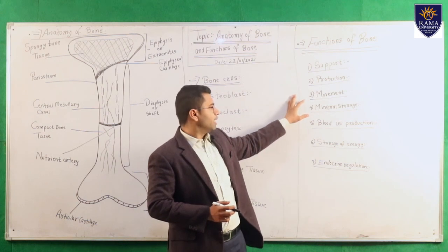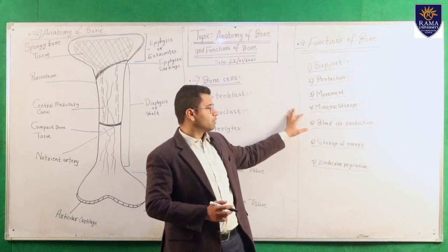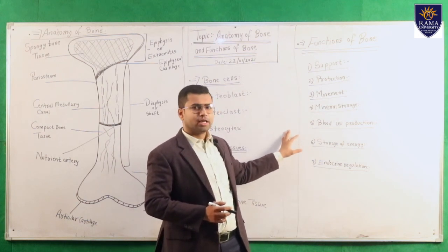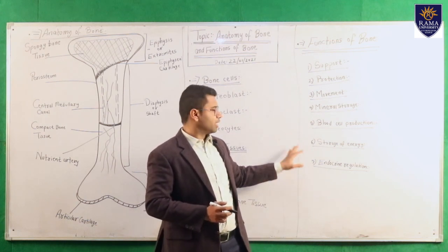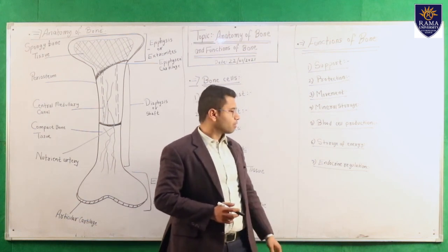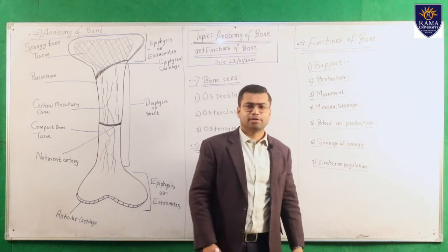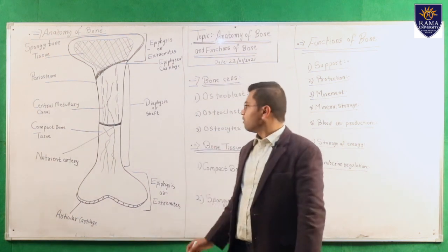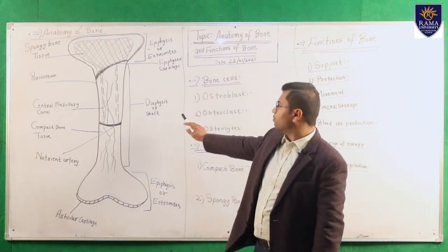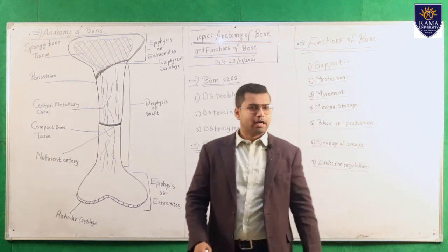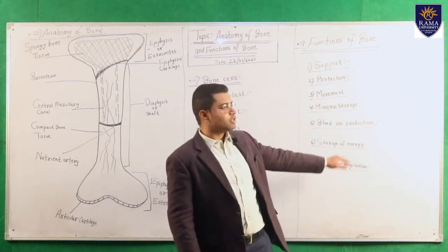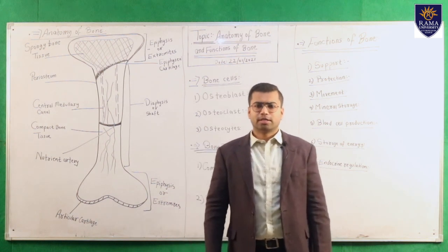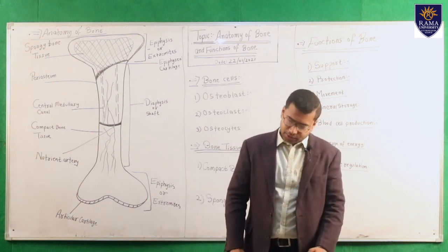In summary, the seven functions of bone are: support, protection, movement, mineral storage, blood cell production, storage of energy, and endocrine regulation. This concludes today's topic on the anatomy and functions of bone.